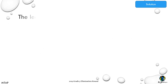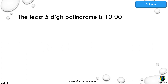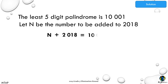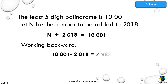The least five-digit palindrome is 10,001. Let n be the number to be added to 2018. We have an equation: n plus 2018 equals 10,001. To find the value of n, work backward. 10,001 minus 2018 equals 7,983.